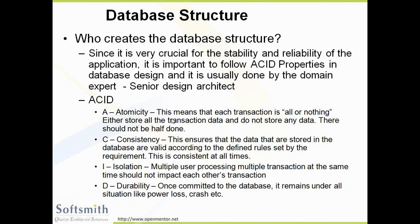Atomicity means each transaction is fully loaded or nothing is loaded — there is no partial activity. Either you load everything or you don't load anything. For example, if I am inserting 10 records, either all 10 should be inserted or none should be inserted — it should not be that 5 records are inserted and the 6th is not. This is done using begin transaction and end transaction. If any failure happens, the transaction is rolled back. Atomicity: either you commit everything or you don't commit anything.